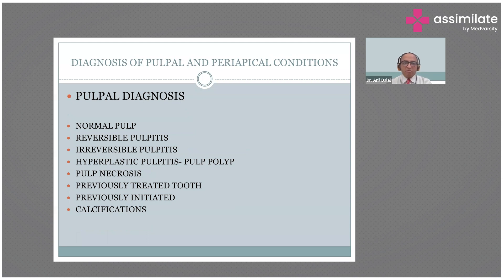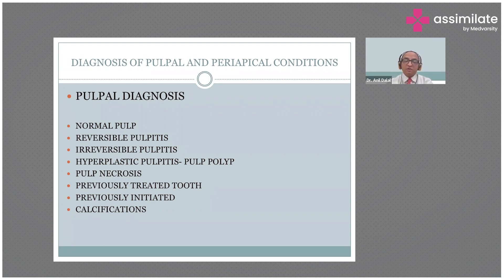Then we have pulpal diagnosis. Pulpal diagnosis can be: normal pulp, reversible pulpitis, irreversible pulpitis, hyperplastic pulpitis — that is the pulp polyp — pulp necrosis, previously treated or endodontically treated, previously initiated RCT which has not been completed, referred to you or patient came without referral, and calcifications.